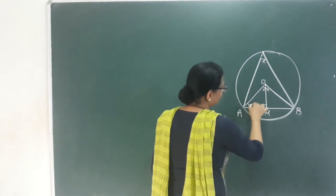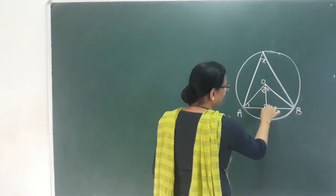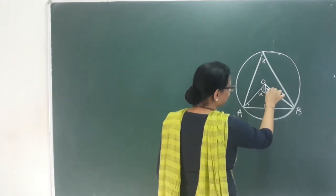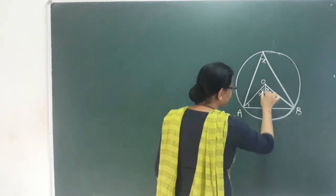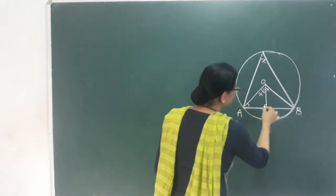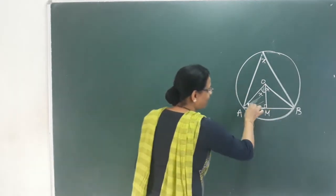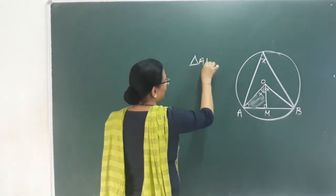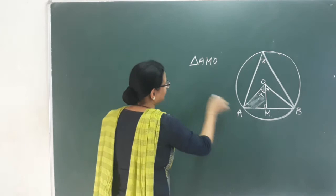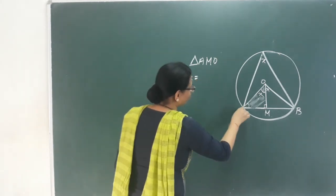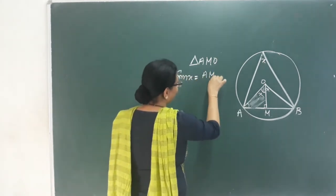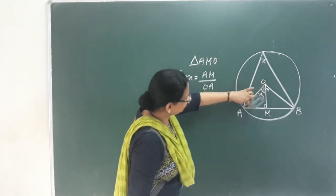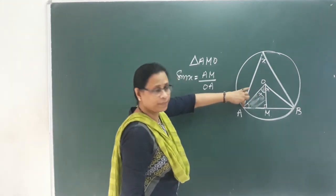The perpendicular from center makes a 90 degree angle. Consider triangle AMO. The angle at A is x. Sin x equals AM divided by OA — that is opposite side by hypotenuse.